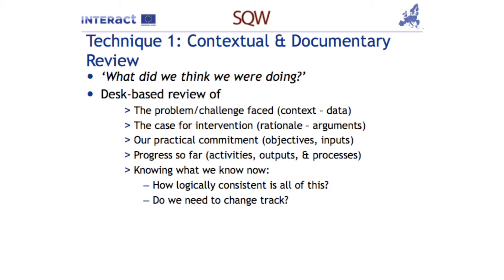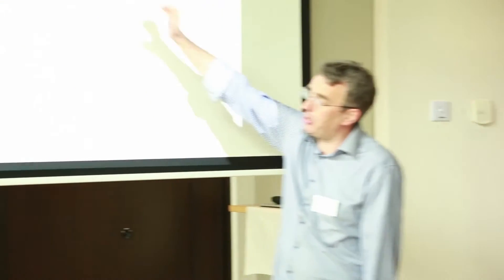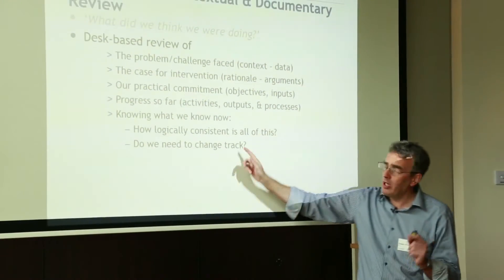What was the practical commitment we were making in taking this programme forward? Back to the logic chain — the objectives we set ourselves and the inputs. What progress have we made so far, be those in terms of activities, outputs, and processes? One thing we didn't talk about this morning on the template logic chain and theory of change is the process component. And knowing what we know now in the life of the programme, at the point when we are undertaking the impact evaluation — how logically consistent is all of this? Was this convincing when we put it together, and in the light of the changed context, do we need to change track?